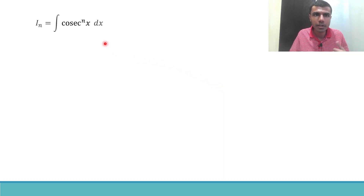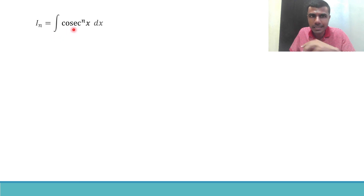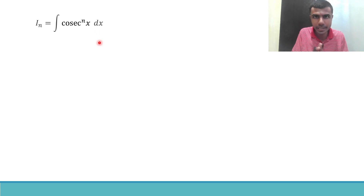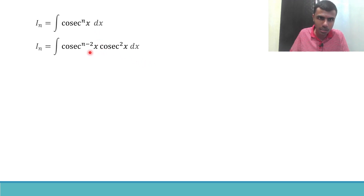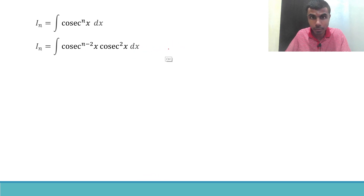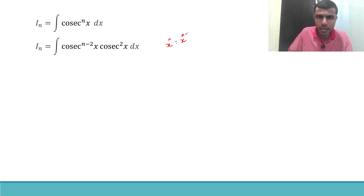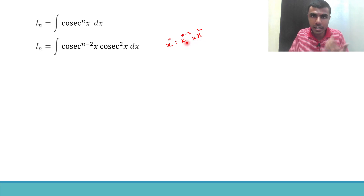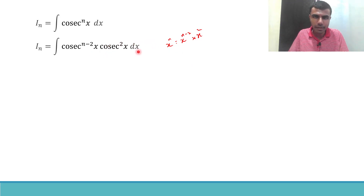First, we take the integral of cosecant power n of x dx and call it I_n. Now, cosecant power n of x can be written as cosecant power (n−2) of x times cosecant squared x. This is valid because x^n can be written as x^(n−2) times x^2, since (n−2) + 2 = n.